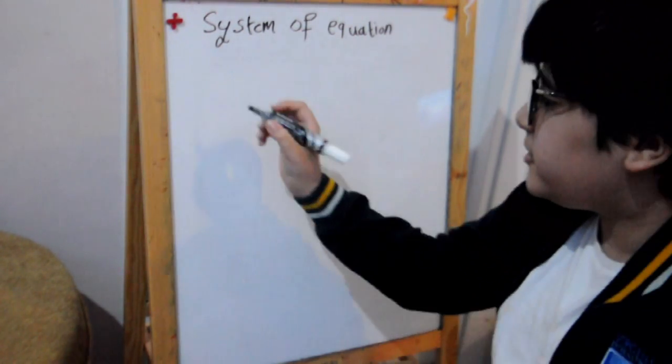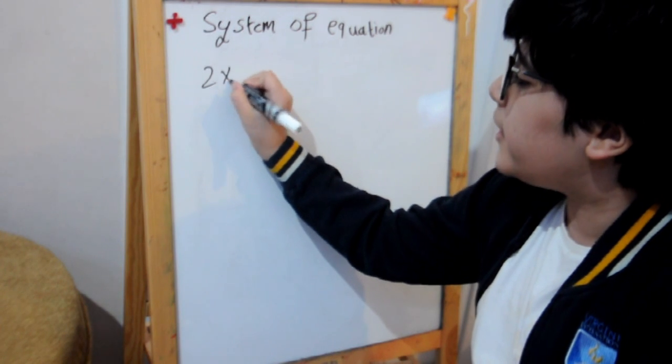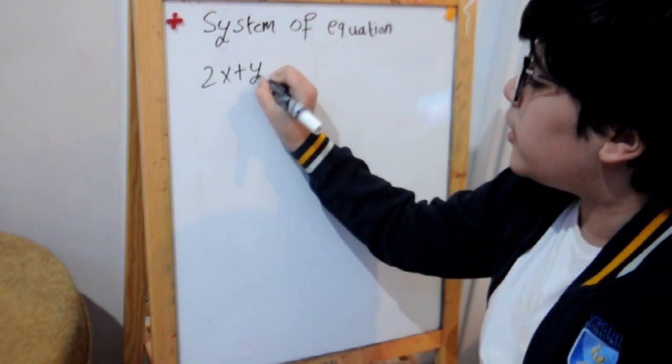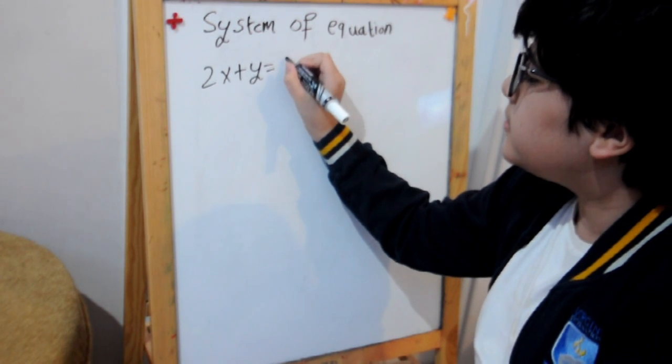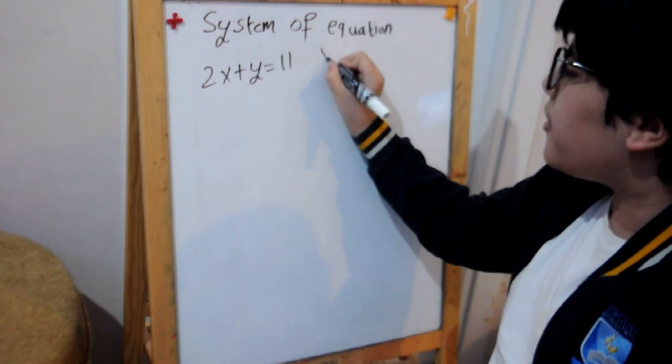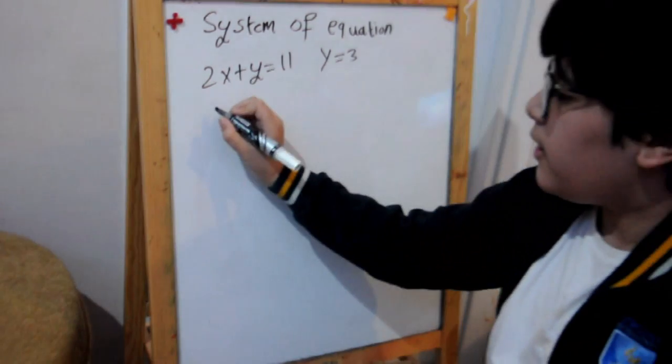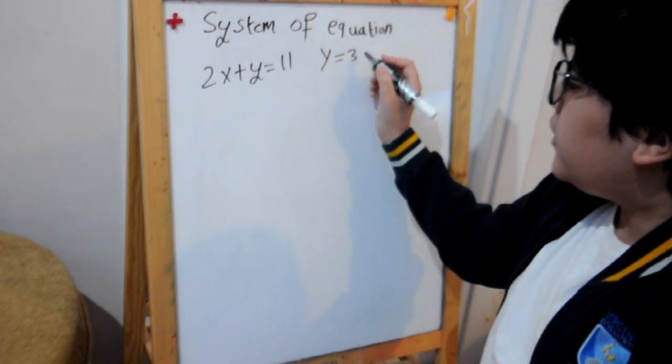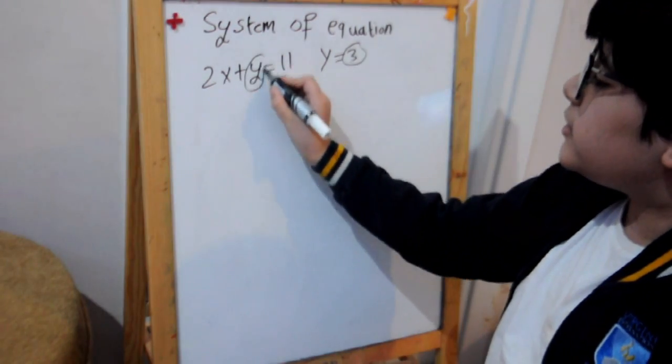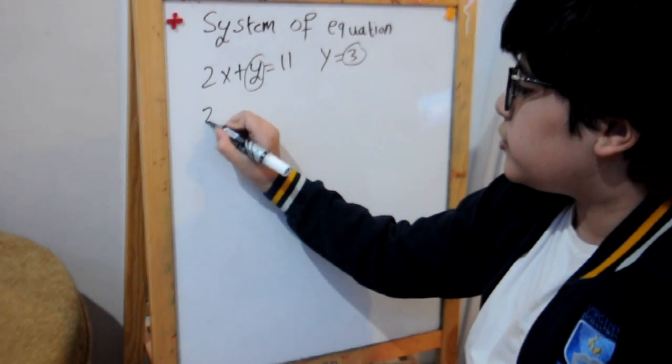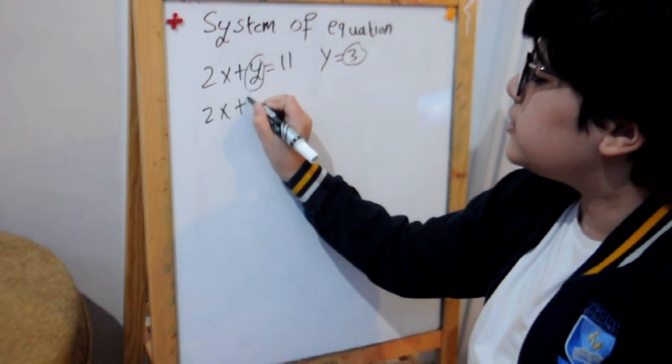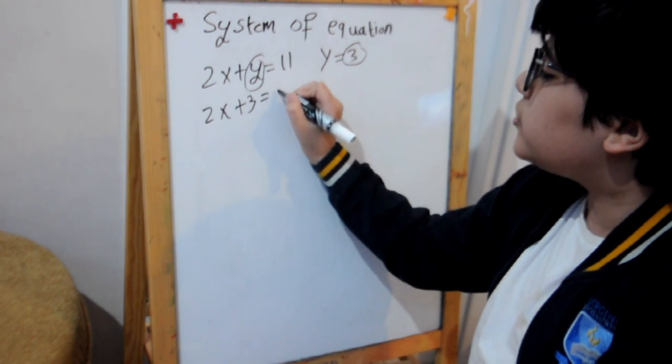First of all, my equation is 2x plus y equals 11, and the y will equal 3. So the 3 will go instead of the y. So it will be 2x plus 3 equals 11.